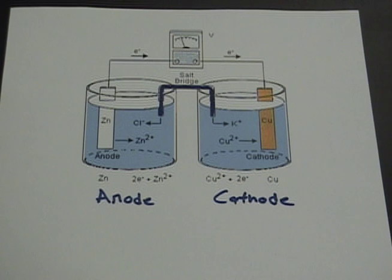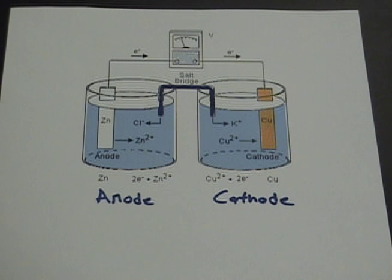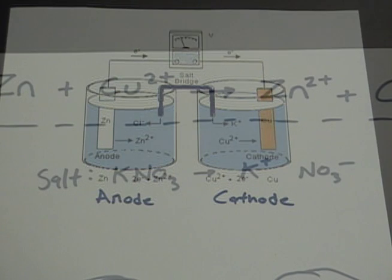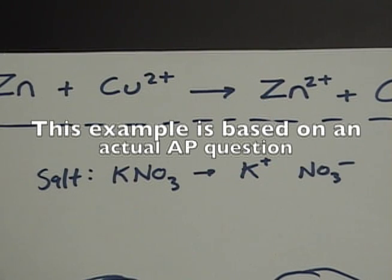Its purpose is to balance the charges of each chamber so that the current will continue to flow. Suppose that our salt bridge contains the salt potassium nitrate.